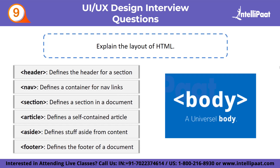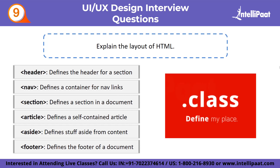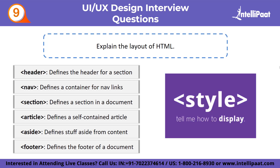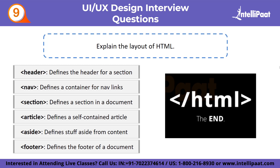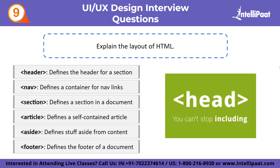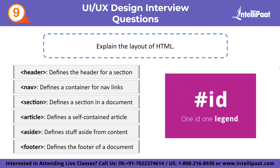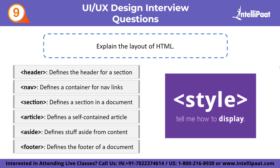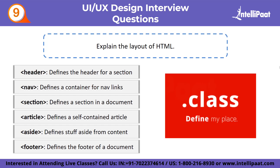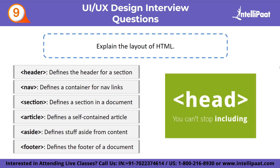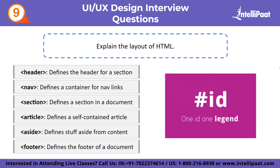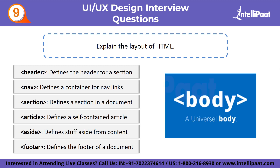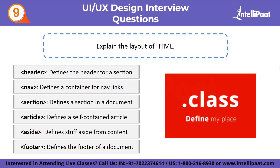The ninth question: explain the layout of HTML. The HTML layout defines how a web page will be organized. HTML5 elements are used to define various parts of a web page. These include: header — defines the header for a section; nav — defines a container for navigation links; section — defines a section in a document; article — defines a self-contained independent article; aside — defines content aside from the main content, such as a sidebar; and footer — defines the footer of a document.